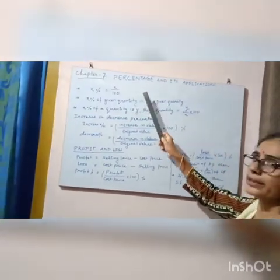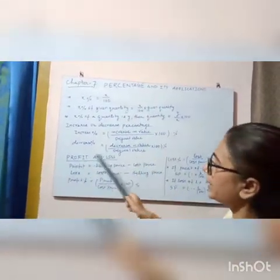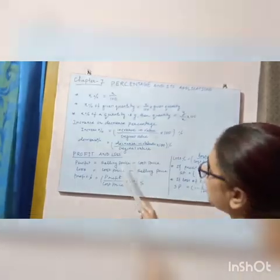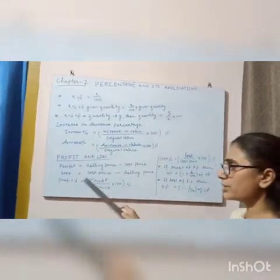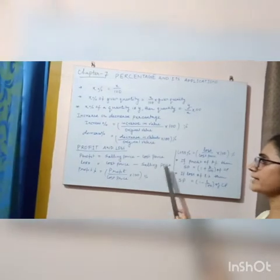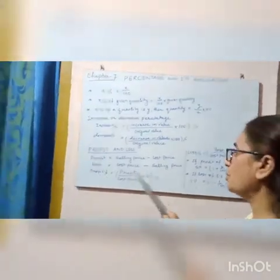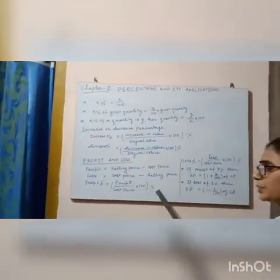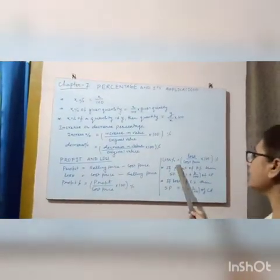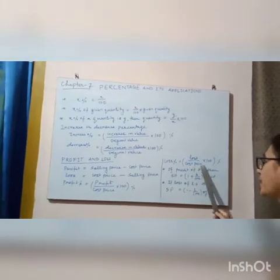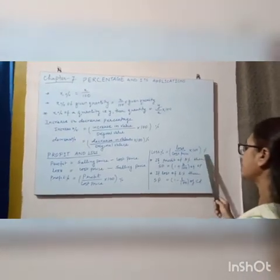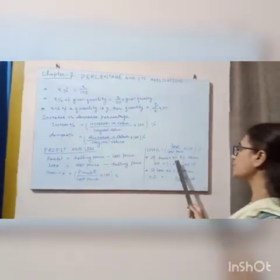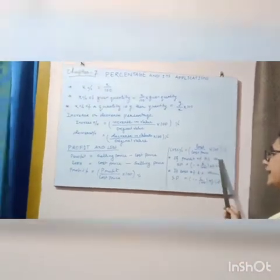In this chapter we convert percentage into fraction or fraction into decimal. Profit and loss: profit equals selling price minus cost price, loss equals cost price minus selling price. Profit percent equals profit by cost price into 100 in bracket into percentage sign. Loss percent equals loss by cost price into 100 in bracket percent sign.